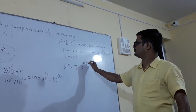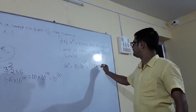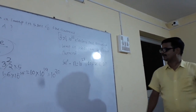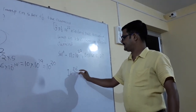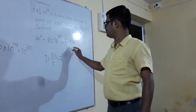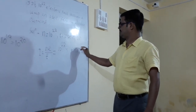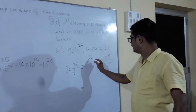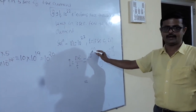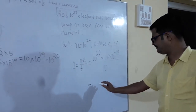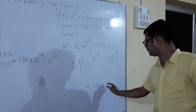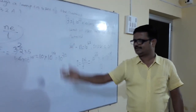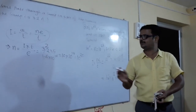Using the current formula: i equals n times e divided by t. Here n equals 10 to the power 22, e equals 1.6 times 10 to the power minus 19, and t equals 10 seconds. Calculating: i equals 10 to the power 22 times 1.6 times 10 to the power minus 19 divided by 10, which equals 1.6 times 10 to the power 2, meaning i equals 160 amperes.